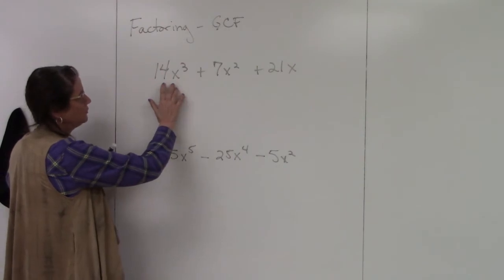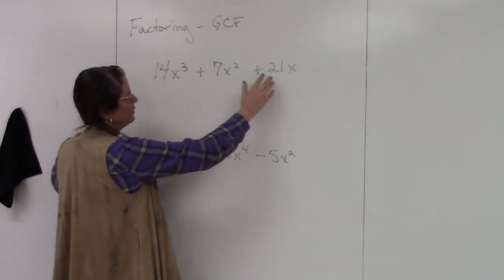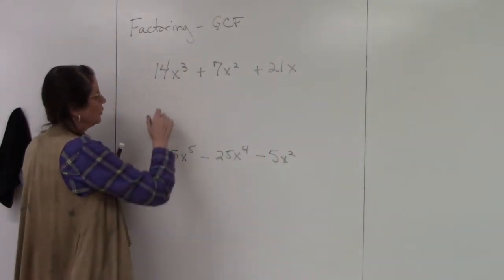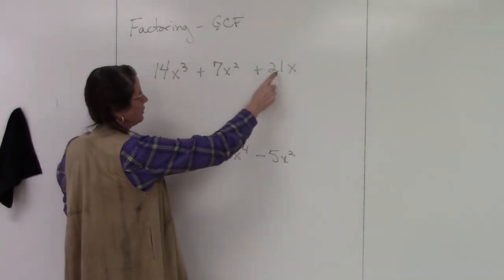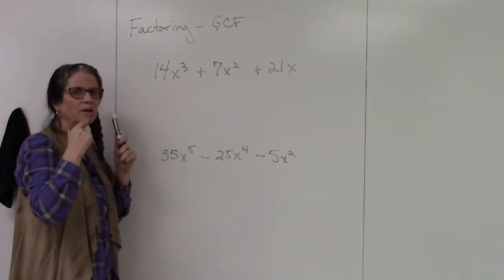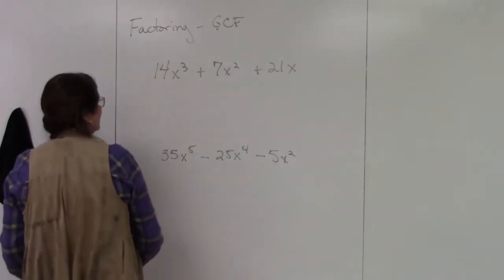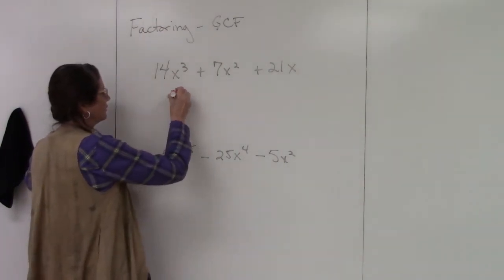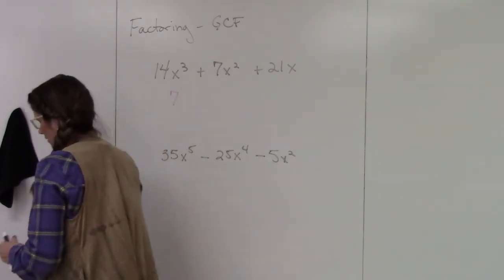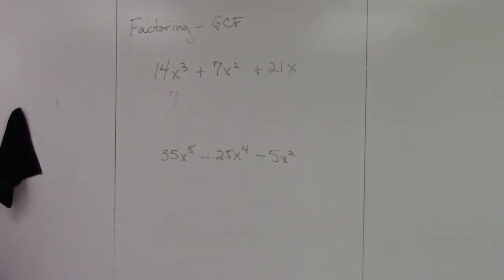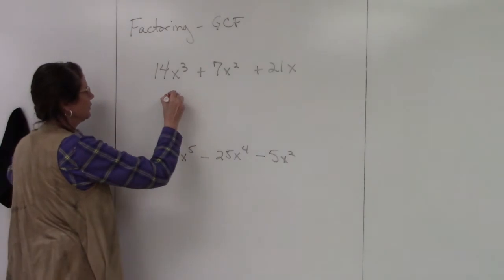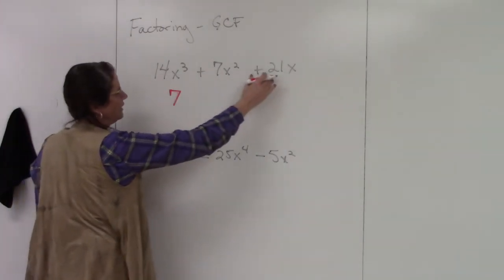I have 14x³, I have 7x², and I have 21x. Well, when you look at 14, 7, and 21, you think, all right, what's in common? What can be divided out of all of those? So I can divide out 7. Okay, so 7, let me get a pen that actually you can see. So 7 is the number that will be divided out evenly.